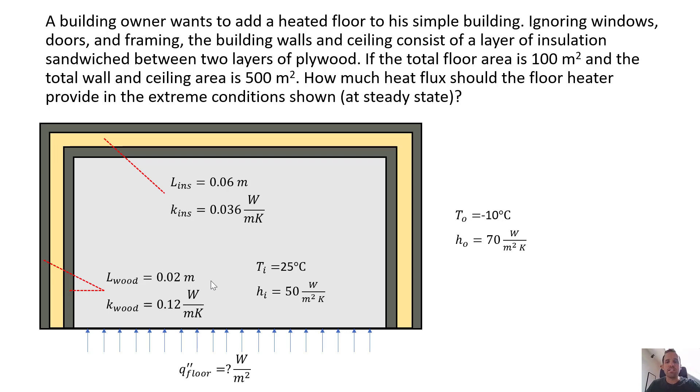We're going to assume that this is steady state. So what makes this an extreme condition? You want to design your heating system to be able to provide heat in the coldest time of the year, so we're using minus 10 degrees C to represent a pretty cold winter day.